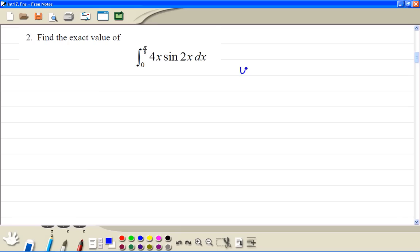So we have u is equal to 4x, and dV dx is equal to sine 2x. We find dV dx.